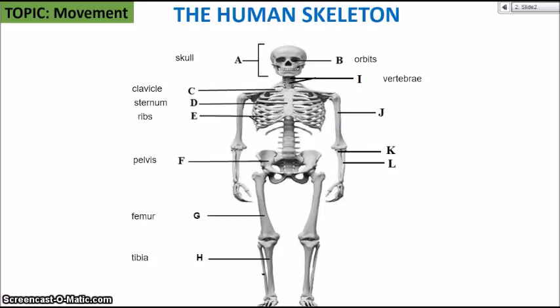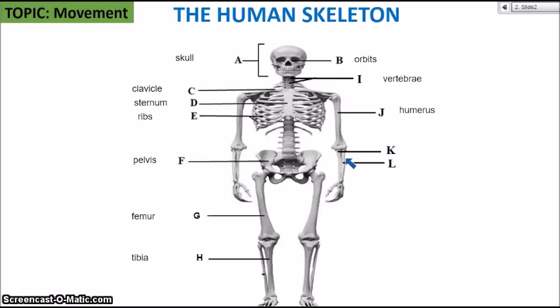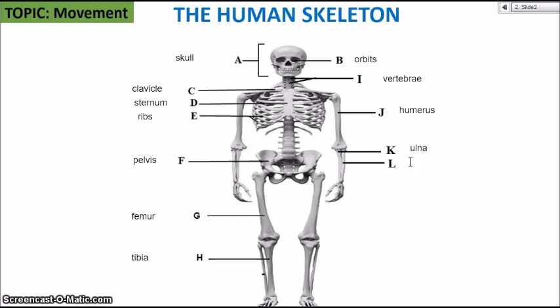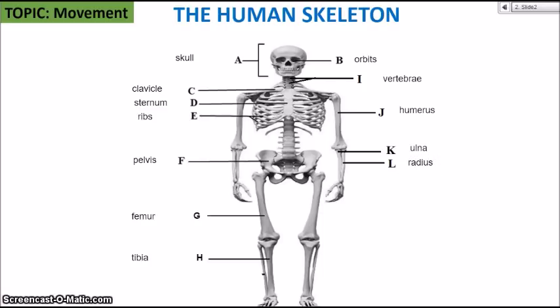J is locating the humerus, also known as your funny bone — that's your upper arm bone. Then we're going to look at the two lower arm bones, the ulna and the radius. K is the ulna, and L, the radius, is the smaller of the two bones. Always remember the ulna is the one that forms the point of the elbow — it's the larger of the two bones.